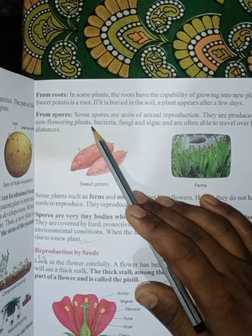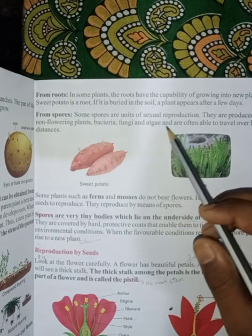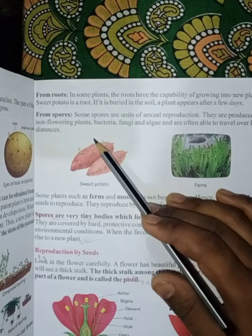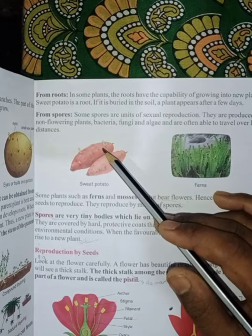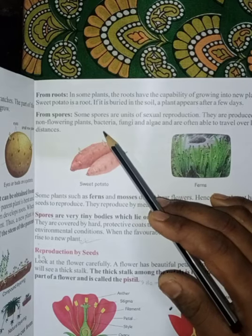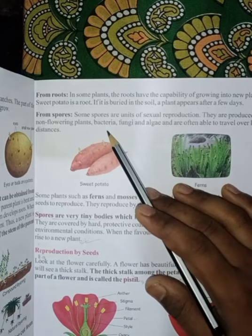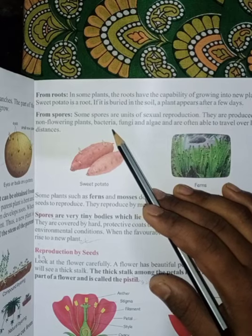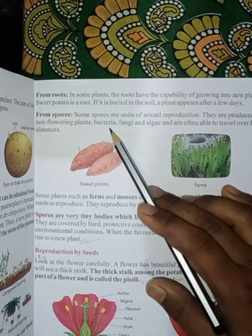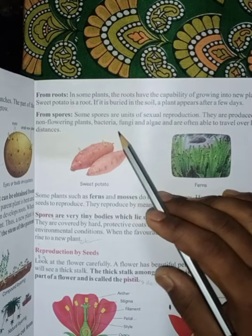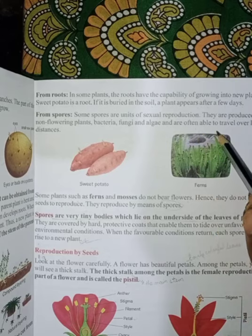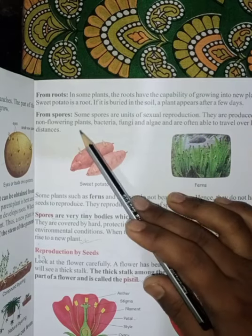From spores. Spores are the unit of reproduction. They are produced by the non-flowering plants. By the help of spores, they are growing new plants. Like bacteria, fungi, and algae — and they are often able to travel over long distances.